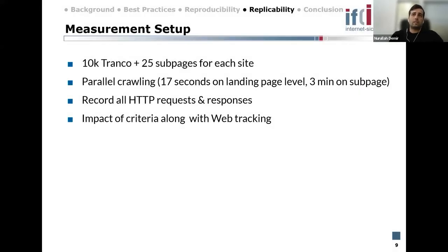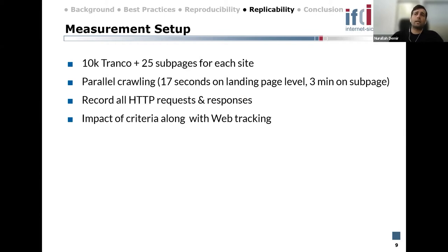For our setup, we used the Tranco top list, and for each page we visited a further 25 sub-pages, because related work shows that visiting sub-pages is important when running a privacy measurement. We ran a parallel measurement, and we can now discuss our findings — I will present the impacts of the criteria along the dimension of web tracking.